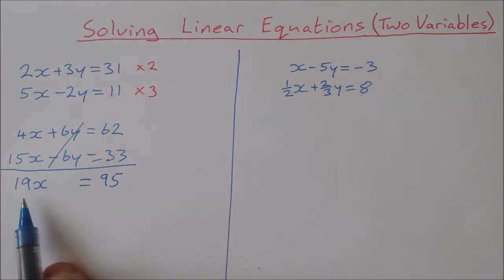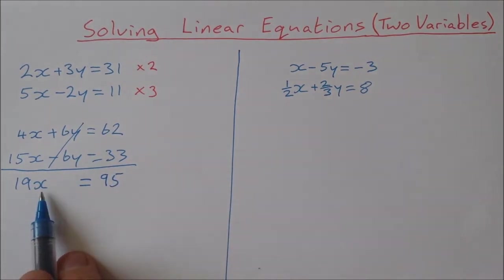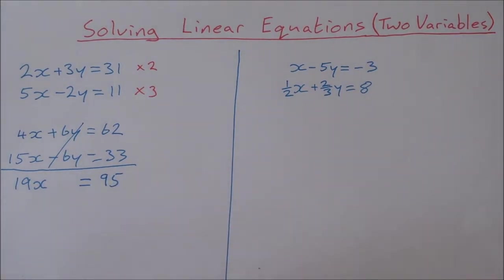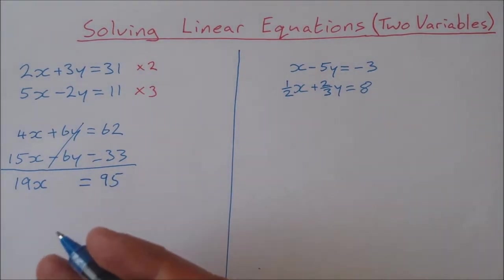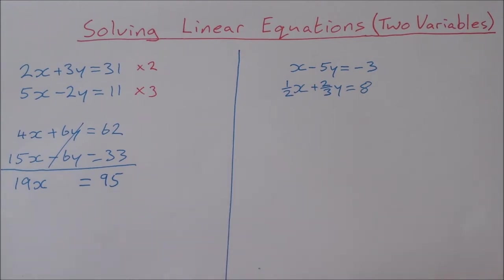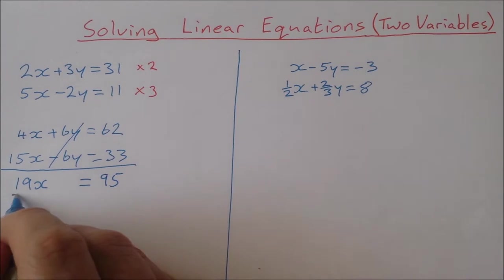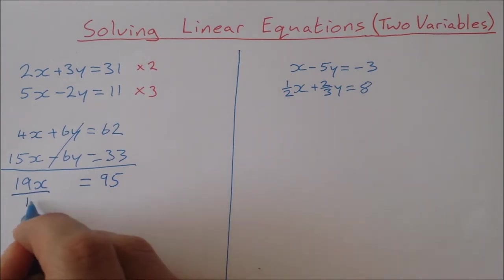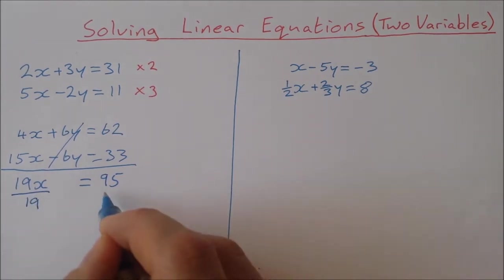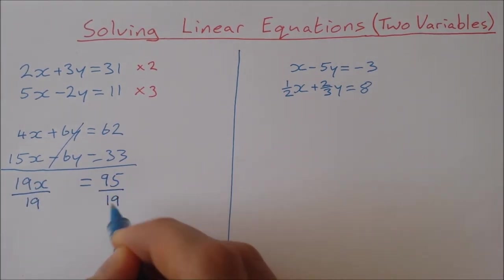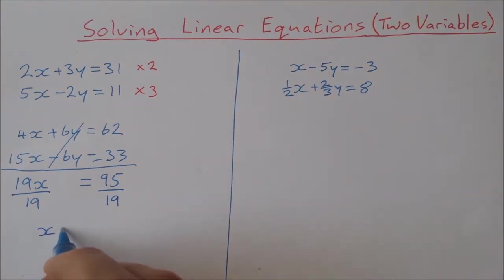Now I have 19x equals 95, which is one equation with one unknown that I can easily solve. I'm going to divide both sides by 19 and I get x is equal to 5.